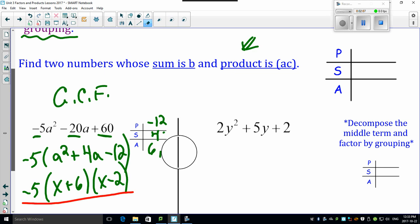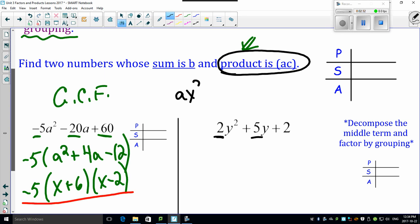Now take a look at this: 2y² + 5y + 2. Notice you cannot divide the 5 by 2, so GCF does not work at this point. Now what do you do? You're gonna look for the product of ac.